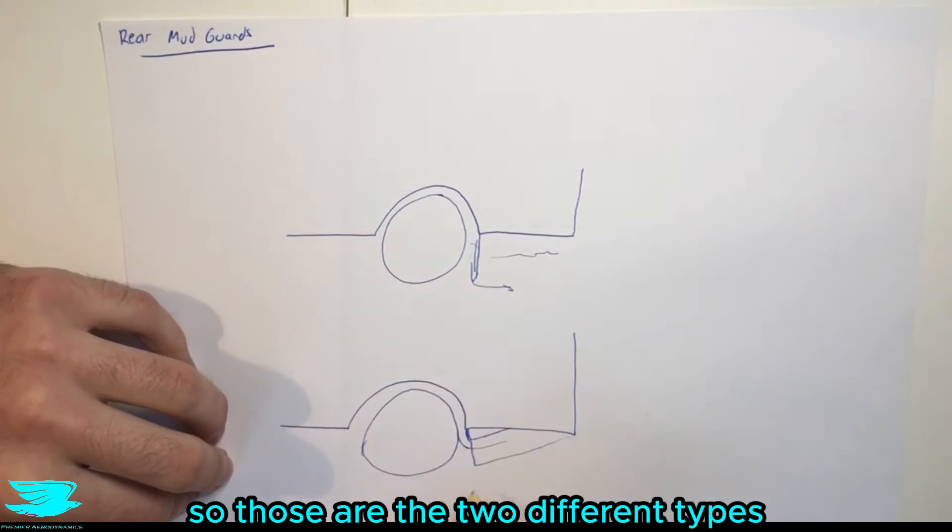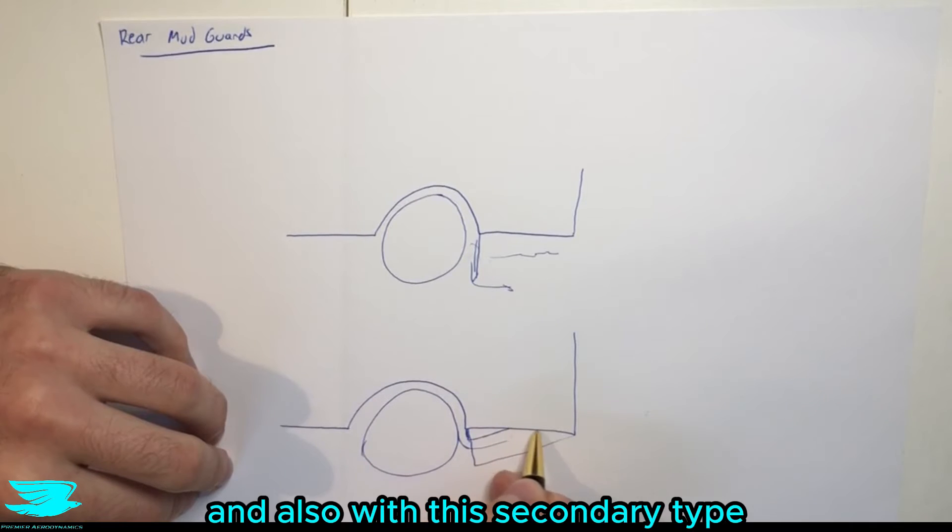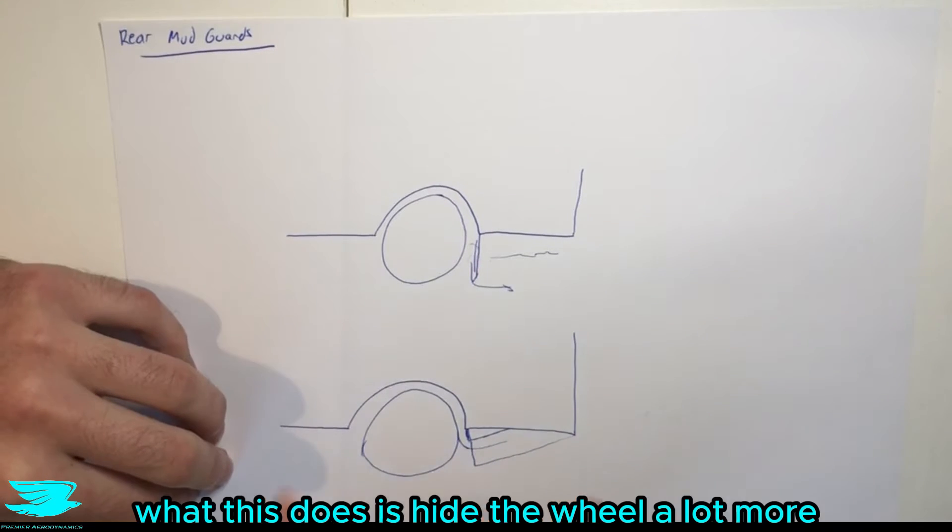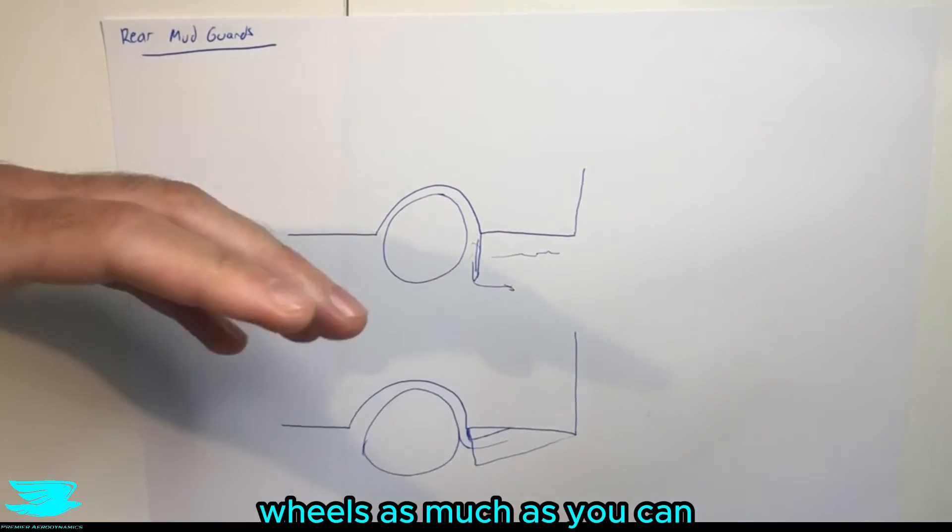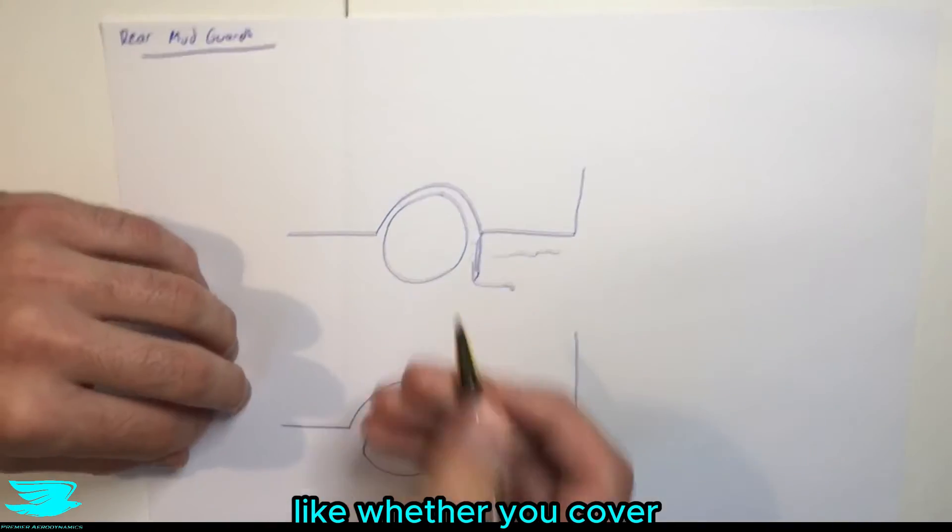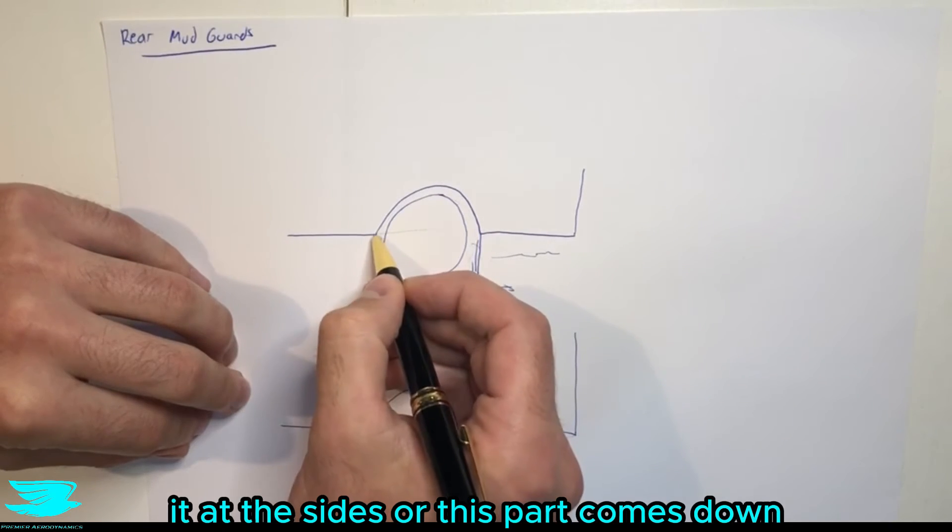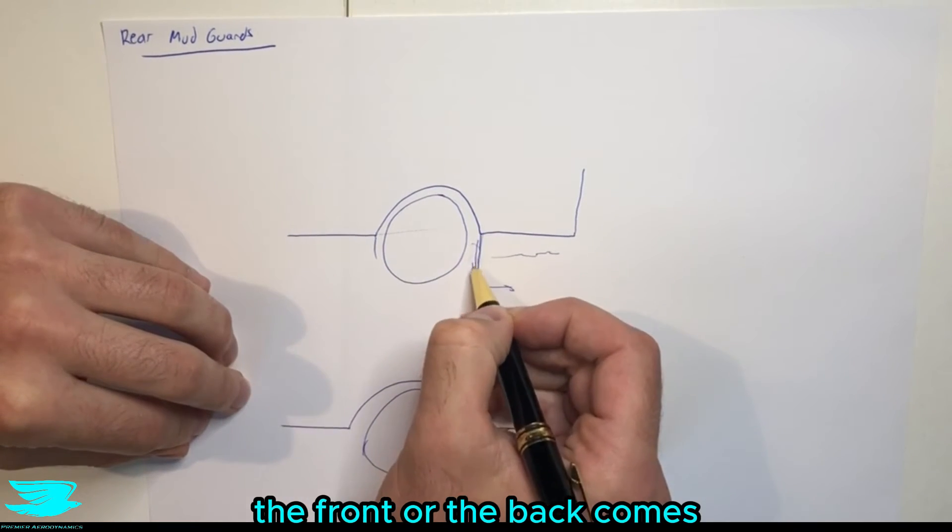So those are the two different types. And also with this secondary type, what this does is hide the wheel a lot more. So in general, covering the wheels as much as you can is always a good idea. Like whether you cover it at the sides or this part comes down at the front or the back comes down here.